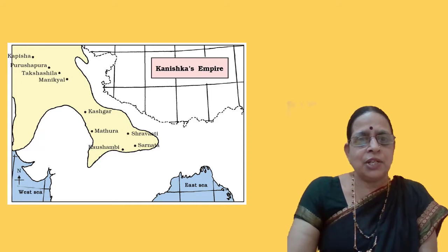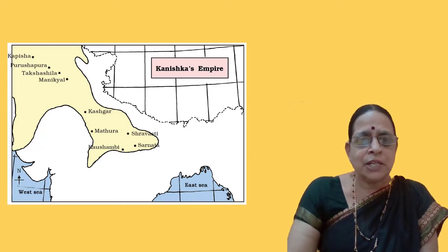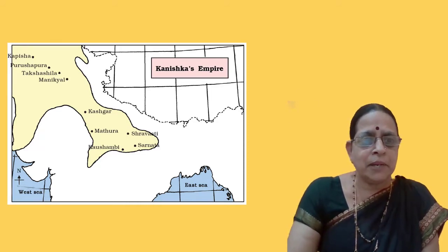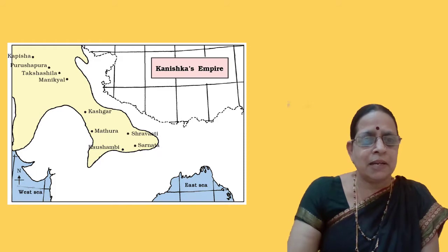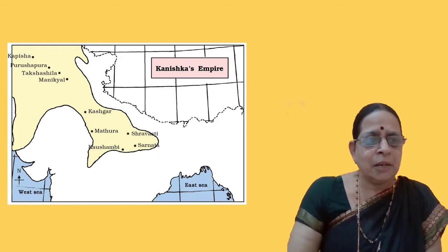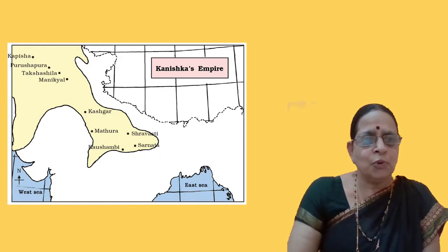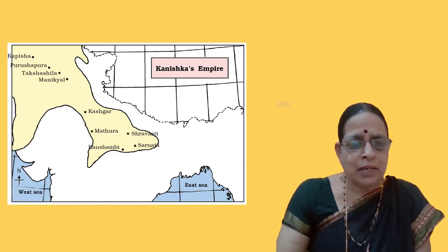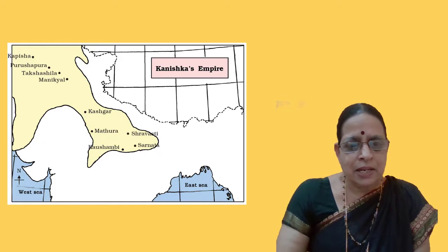This map shows the extent of Kanishka's empire. Some of the important places marked here include Kapisha, Purushapura, Takshashila, Manikyal, Kashgar, Mathura, Kaushambi, Shravasti, and Sarana.